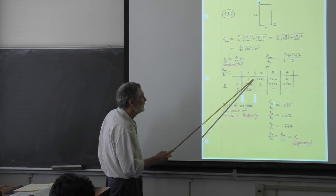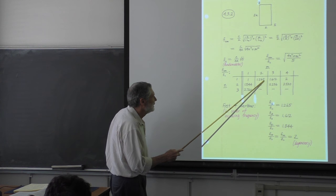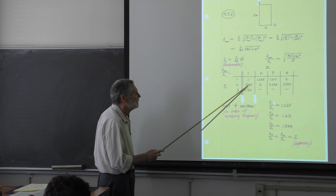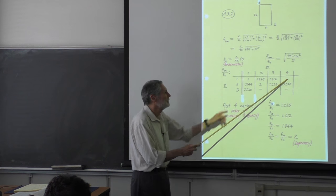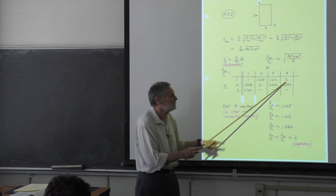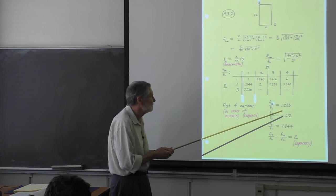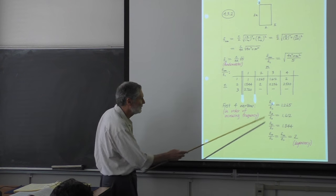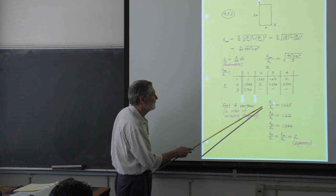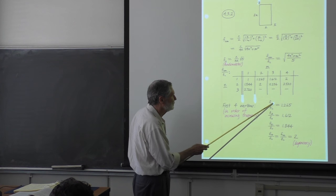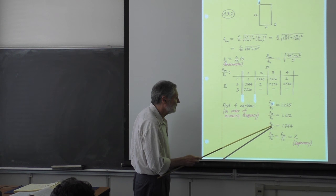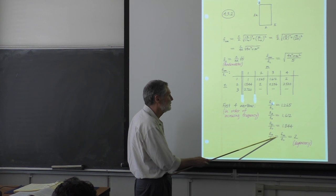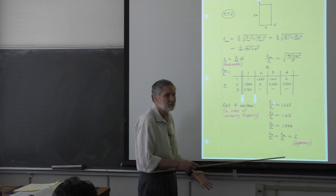So we have the fundamental, the first overtone, the second, the third. And the fourth is degenerate - there are two modes that have the same frequency. Those are called degenerate modes. So the answer is: lowest is the fundamental, next is the 1-2 mode, then the 1-3, then the 2-1, and finally for the fourth overtone there are actually two modes with the same frequency.